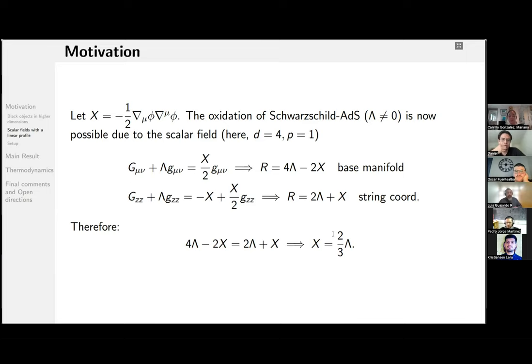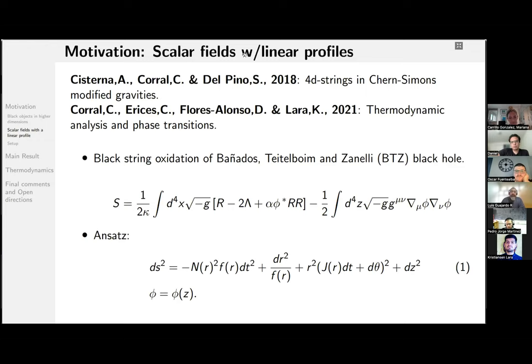Okay. Notwithstanding, black strings were introduced as higher-dimensional objects. Part of the community got interested in the analysis of four-dimensional strings. For example, these two groups studied four-dimensional strings in Chern-Simons modified gravities, in which the scalar field gets non-minimally coupled to the Pontryagin density.